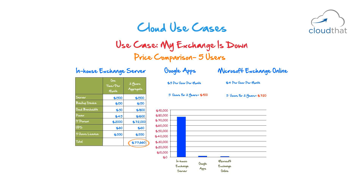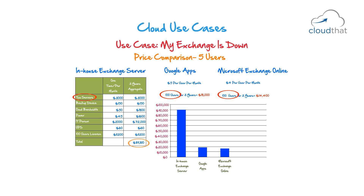But what if we increase the users to 100 users? You will need two servers to sustain the increase in load and licenses for those 100 users. The total comes to about $89,000 for 100 users for three years, while using Google Apps costs about $18,000 and using Microsoft Exchange Online costs $14,400.